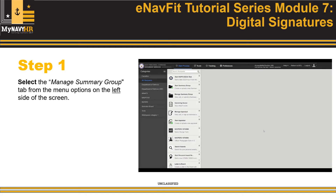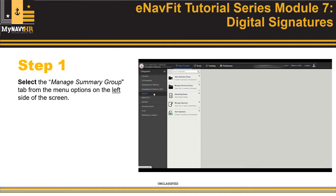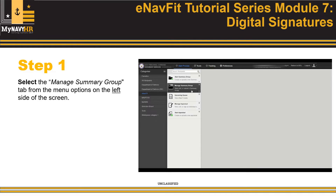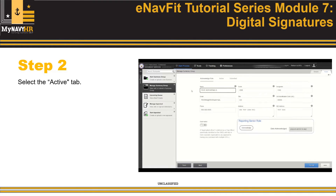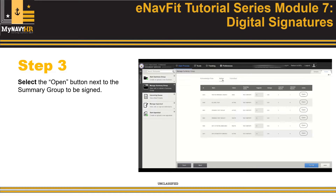Step 1: Select the Manage Summary Group tab from the menu options on the left side of the screen. Step 2: Select the Active tab. Step 3: Select the Open button next to the summary group to be signed.